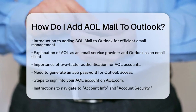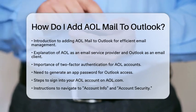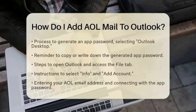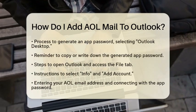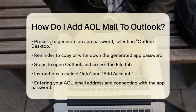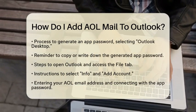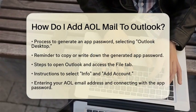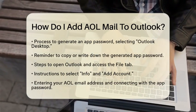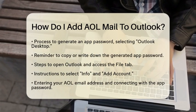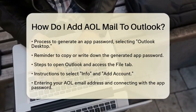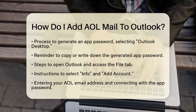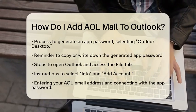First, sign into your AOL account by going to AOL.com. Once you are logged in, navigate to your profile and select Account Info. From there, click on Account Security. You will see an option to Generate App Password. Choose Outlook Desktop from the list and generate the password. Make sure to copy or write down this app password, as you will need it shortly.